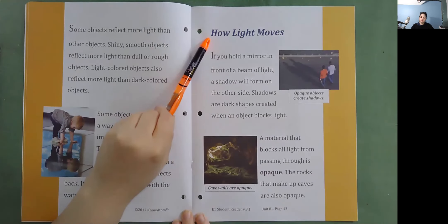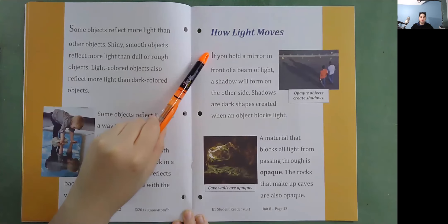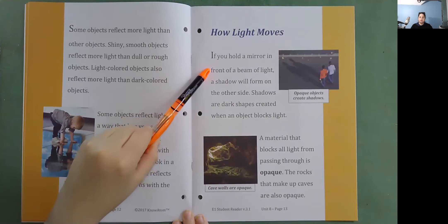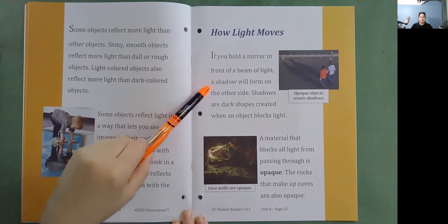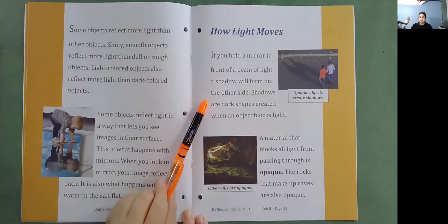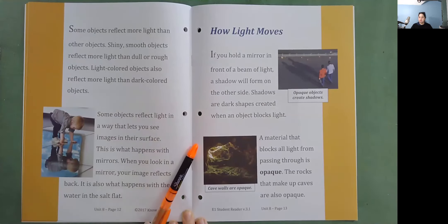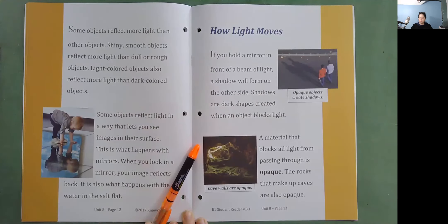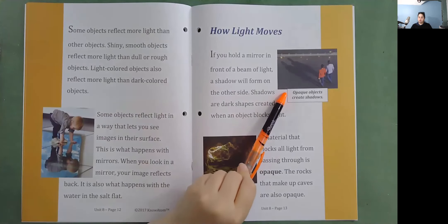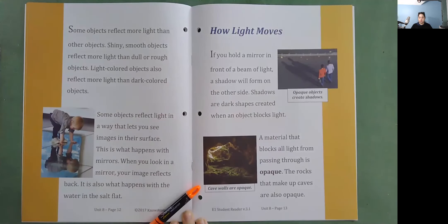How light moves. If you hold a mirror in front of a beam of light, a shadow will form on the other side. Shadows are dark shapes created when an object blocks light. A material that blocks all light from passing through is opaque. The rocks that make up caves are also opaque. Opaque objects create shadows. Cave walls are opaque.